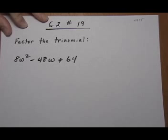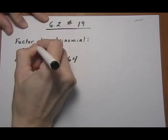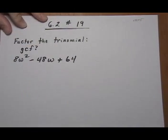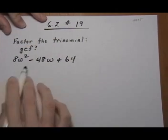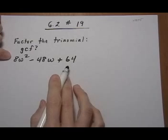The first thing you always want to do, no matter what kind of factoring you're doing, is look for a GCF. So is there a GCF, a greatest common factor for all three terms that we have here? Yes, there is. We can pull out an 8.